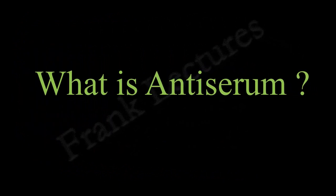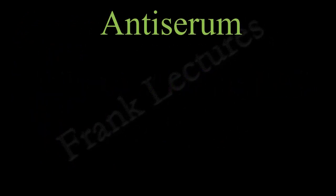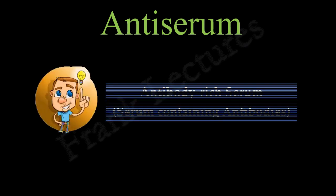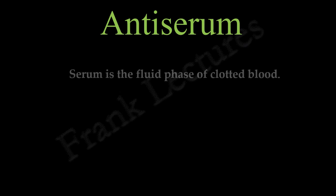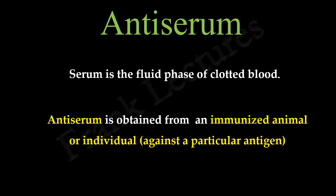Anti-serum is antibody-rich serum — in other words, it is the serum containing antibodies. Serum and anti-serum both contain antibodies, so what is the difference? We know that serum is the fluid phase of clotted blood. When serum is taken from an individual immunized against a particular antigen, it is called anti-serum. So the difference is that anti-serum is obtained from an immunized animal or individual.